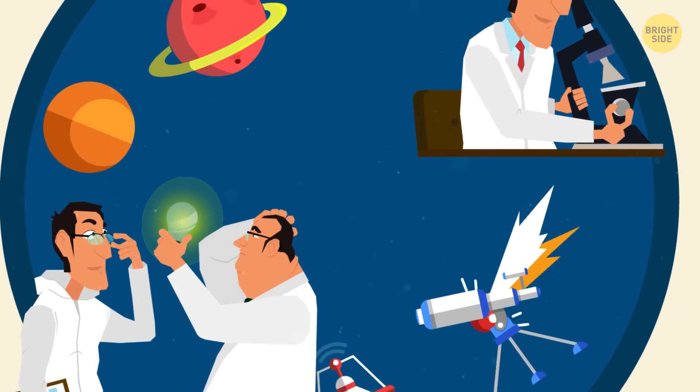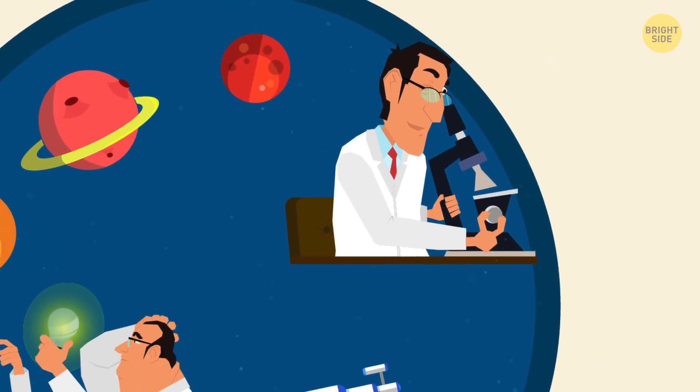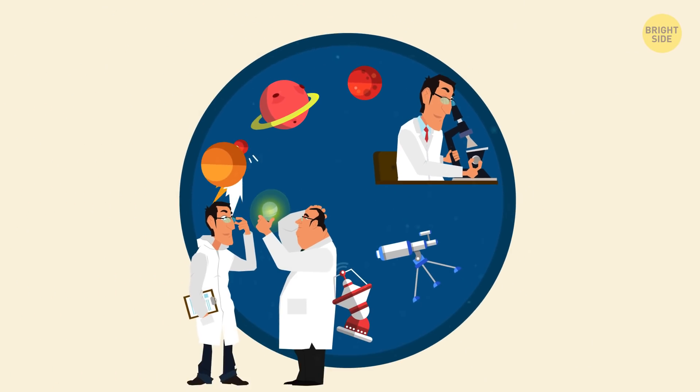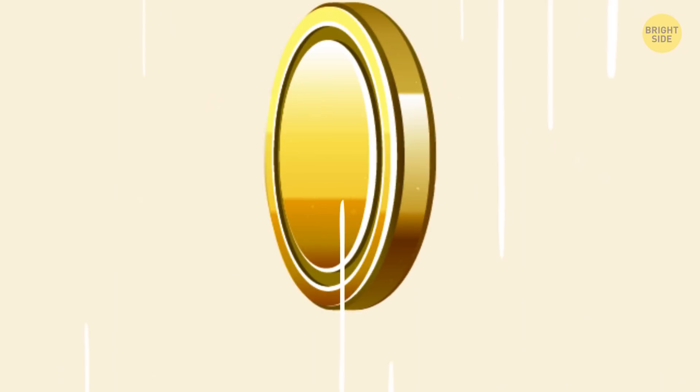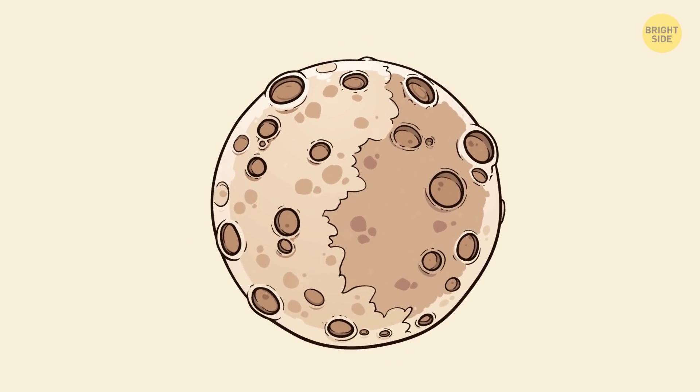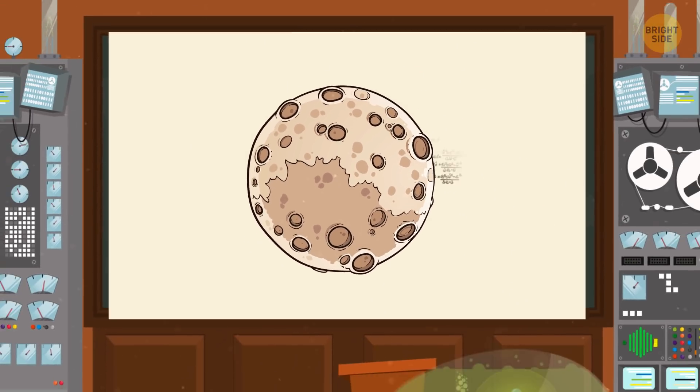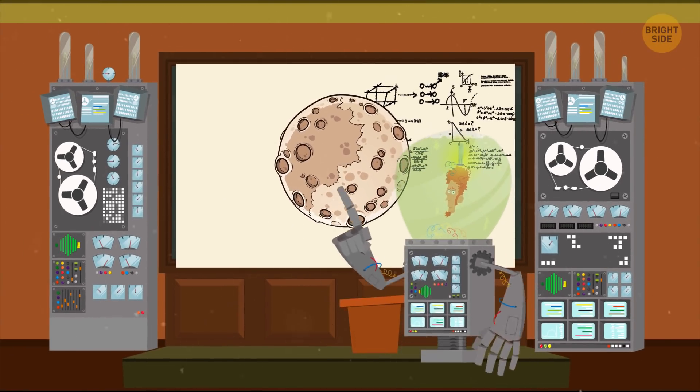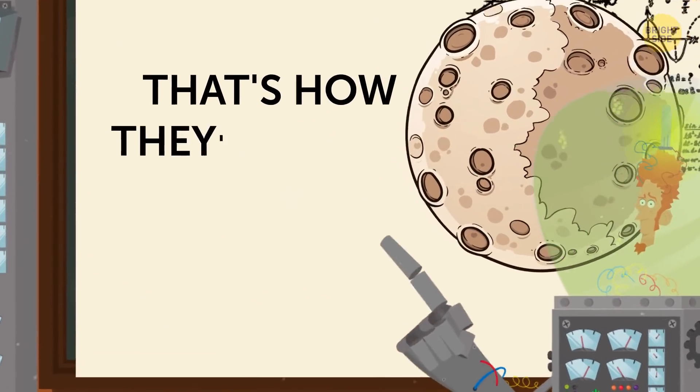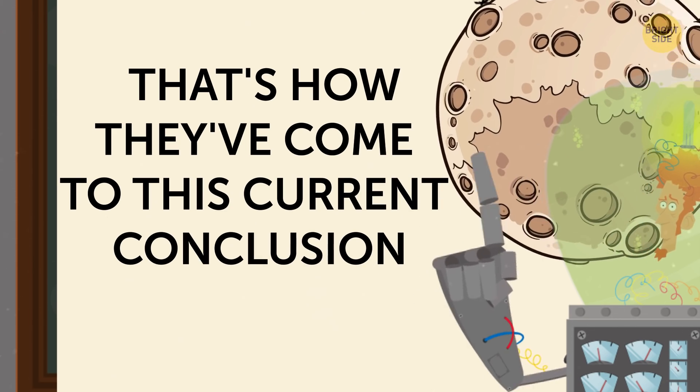The most recent study has turned everything upside down. The discovered exomoon might not be a moon at all. Most astronomers have agreed with the conclusion that it might be something fundamentally different. And that's how they've come to this current conclusion.